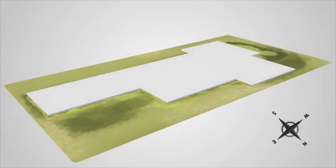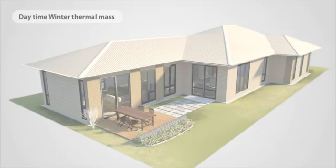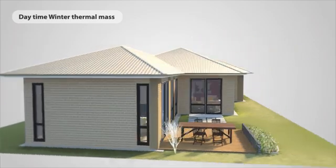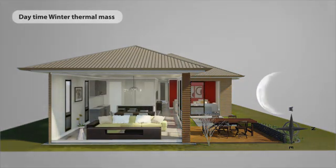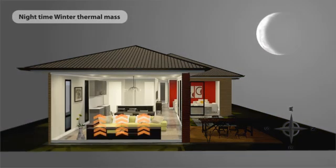Thermal mass is the ability to absorb, store and re-release heat. Thermal mass is heavyweight construction such as concrete or brick, but needs to be used on the interior to work as thermal mass. The advantage of having thermal mass in your home is that it moderates the indoor temperature in both winter and summer. In winter, the sun shines down into the living rooms and the heat is stored in the thermal mass. As the air inside the house cools during the night, the heat in the thermal mass is re-released back into the room, helping to maintain the internal temperature and requiring less heating.